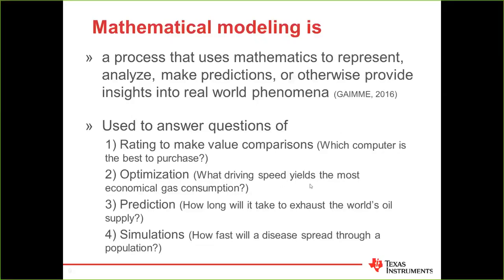There are a lot of definitions floating around about what mathematical modeling is. We're using the one from the GAMI report, which describes it as trying to use mathematics to make sense of things in the real world. We've categorized our work into four categories: ratings for making value comparisons, optimization questions, predictions, and simulations to help us understand things in the real world.